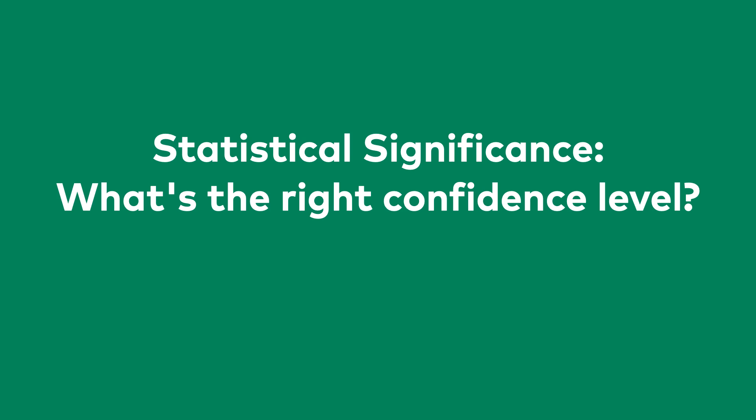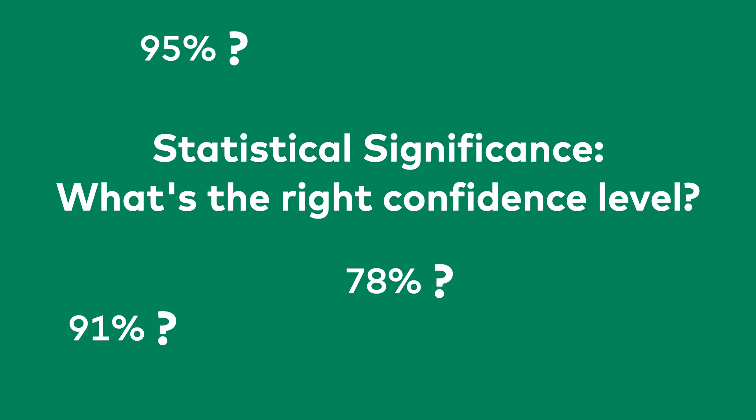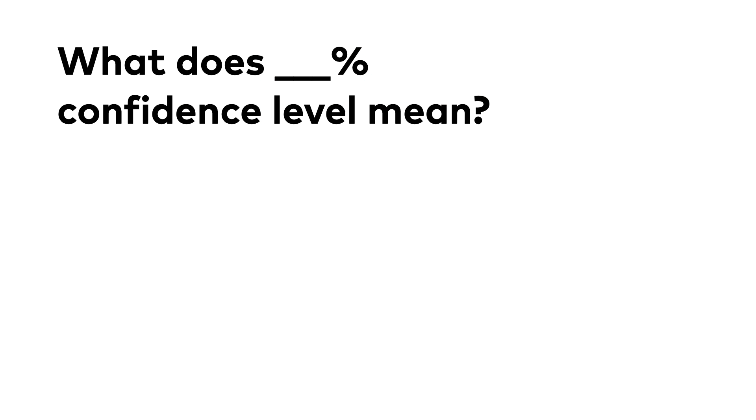We have seen statistical significance numbers like 91% or 78%. You might have heard people saying that 95% is the sufficient confidence level when it gets to statistical significance. Some say the best practice is 90%, others say 99%. But what's the truth? What is good enough? What is too low? What is too high?